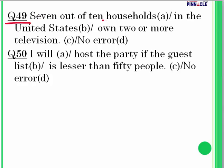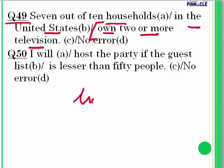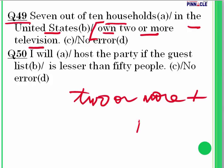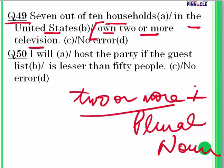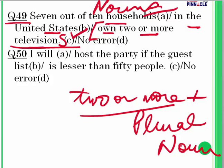Question 49: 'Seven out of ten households in the United States own two or more television.' After 'two or more,' we must use a plural noun. 'Two or more boys' is correct, not 'two or more boy.' Similarly, 'two or more televisions' is correct. The error is in part C, related to nouns.